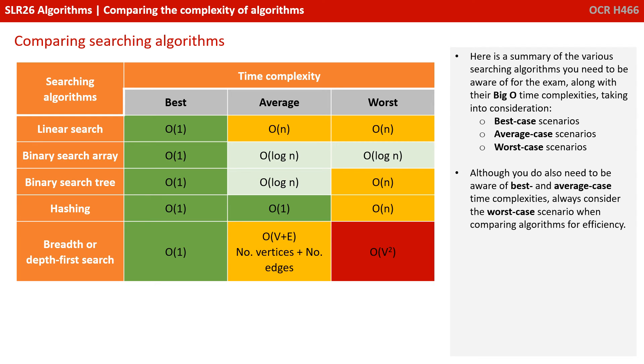Here's a summary of the various searching algorithms you need to be aware of for the exam, along with their big O time complexities, taking into consideration best, average and worst case scenarios. Although you do also need to be aware of the best and average case time complexities, you should always be considering the worst case scenario when comparing algorithms with each other for the purpose of efficiency.